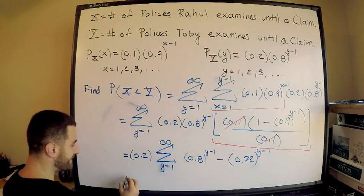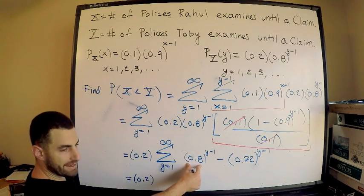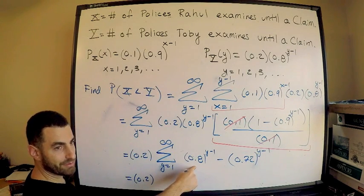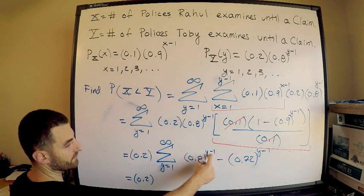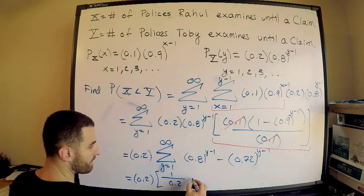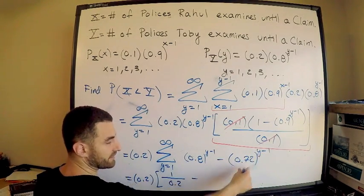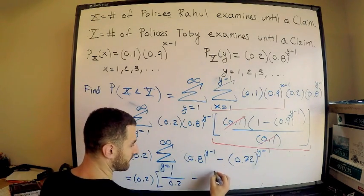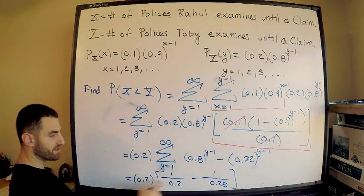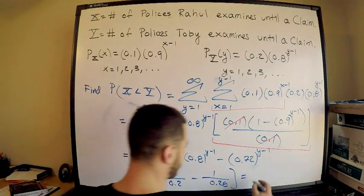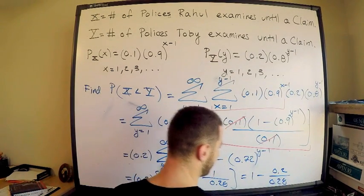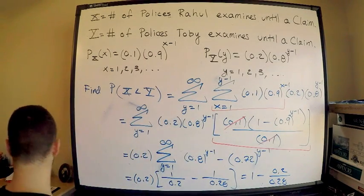Y equals 1 to infinity of this business. This is 0.2. What happens if I evaluate this one? Evaluate them individually. This guy right here from 1 to infinity, this is just an infinite geometric sum. Common ratio is less than 1, so it absolutely converges. First term when I plug in 1 is 1. So this is times 1 over 1 minus common ratio, so 0.2. Minus - I'll evaluate this one as well. Infinite, common ratio is less than 1 as well, so it converges. First term is also 1 divided by 1 minus common ratio, which is 0.28. Distribute the 0.2, so this is equal to 0.2 times this business is 1. Distribute - 0.2 times this is 0.2 divided by 0.28.